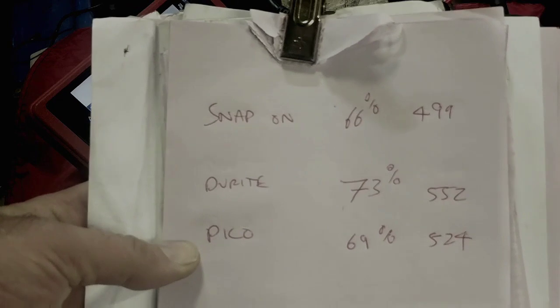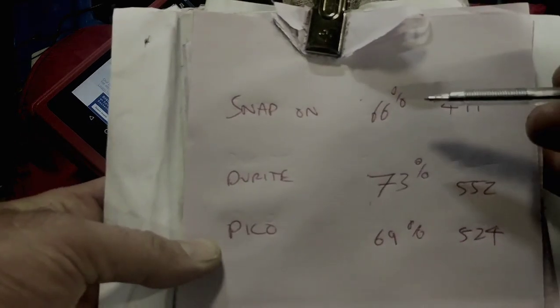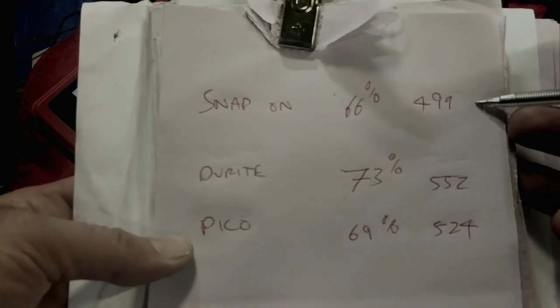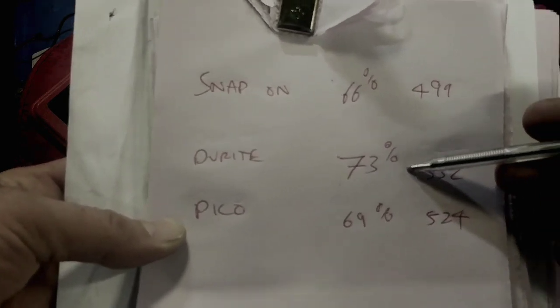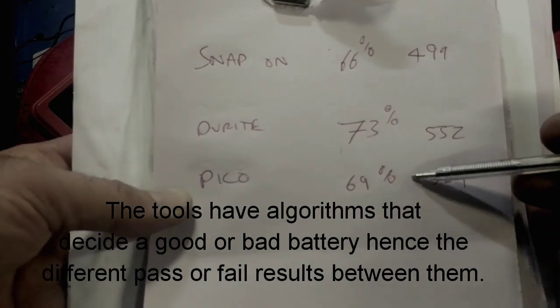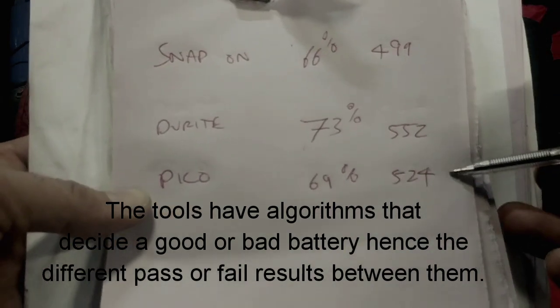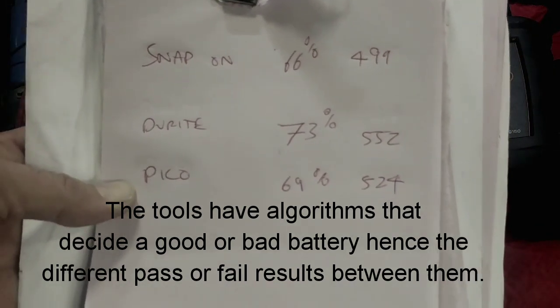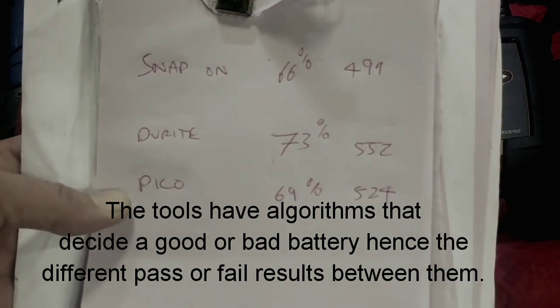So when we look at the results, Snap-on 66% capacity, 499 cold cranking amps. Durite 73% and 552 cold cranking amps. And Pico at 69% and 524 cold cranking amps. So when you look at the variation in percentage there, it's less than 10% over three different tools.